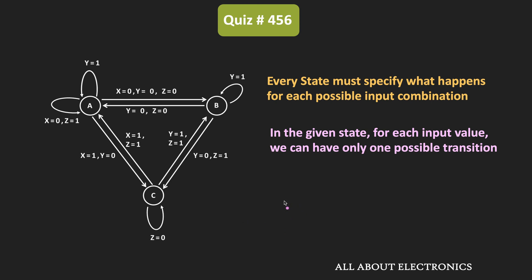First, let us consider state A. In state A, one transition occurs when Y is equal to 1, and this will occur when X and Z are either 0 or 1. So in short, this transition will occur for four different input combinations — whenever Y equals 1 and X and Z are either 0 or 1. A second transition will occur when X is 0 and Z is equal to 1, and the value of Y can be either 0 or 1, giving two input combinations.